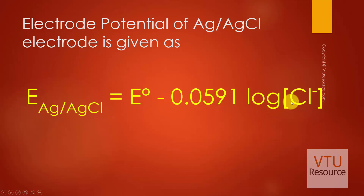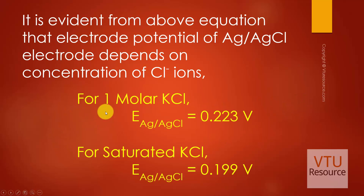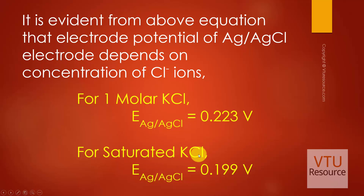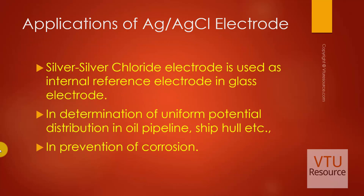If you are using a 1 molar KCl solution in the Ag/AgCl electrode, then the potential is 0.223 volts. If you are using saturated KCl, then the electrode potential of the silver silver chloride electrode is 0.199 volts.